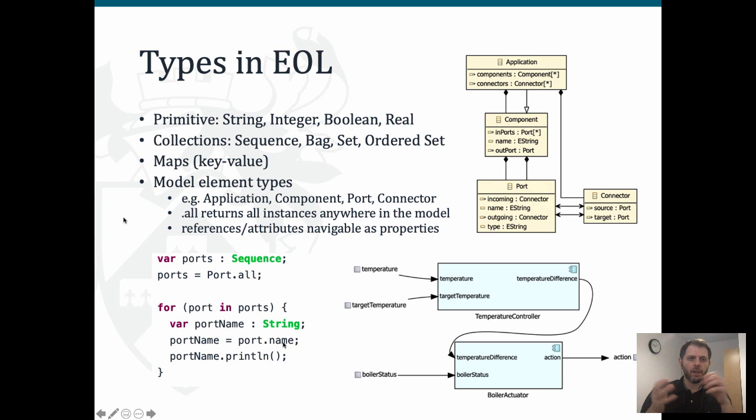We can iterate through ports using a for loop, then create a variable called portName of type String, and get the name of the port using port.name - valid because the Port type in our meta model has a name attribute. In the same way we could access port.incoming to get all connectors going towards that port, or port.type to get the type of the port, and so on. Then we print the port name using EOL's built-in println function.